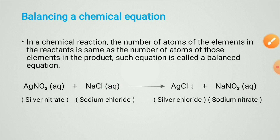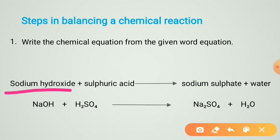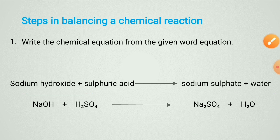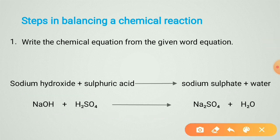Now see the steps in balancing a chemical reaction. Step 1: write the chemical equation from the given word equation. The word equation is: sodium hydroxide plus sulfuric acid gives sodium sulfate plus water. You write down the chemical formulas: NaOH + H₂SO₄ → Na₂SO₄ + H₂O.